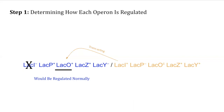Now let's focus on the orange operon. We know that the orange operon has a wild-type regulator; however, the orange operator is mutated, so the regulator is not able to bind here. Because of the operator mutation, we can say that transcription of the orange operon will always occur because it is unable to be regulated.